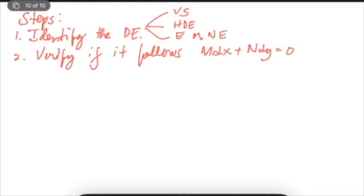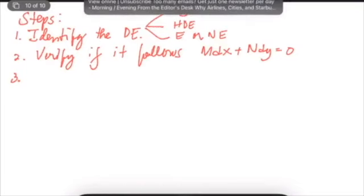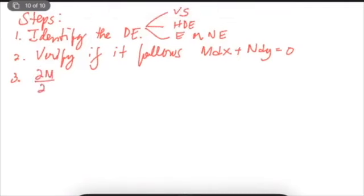Identify the M function and the N function. Once you have the M dx plus N dy format, get the partial derivative of M with respect to y, and check if it equals the partial derivative of N with respect to x. If they are both equal, then the equation is exact. If they are not equal, then it is non-exact.